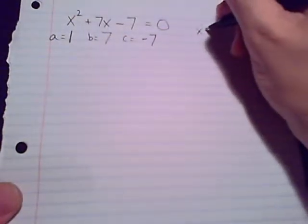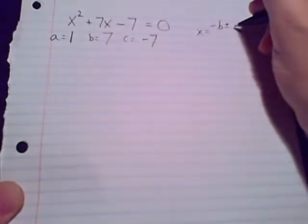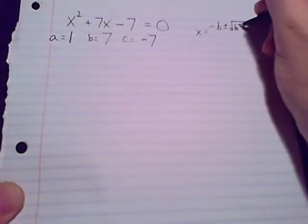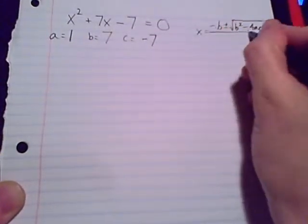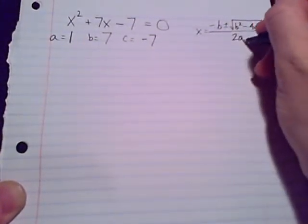And let's plug into this formula: x equals negative b plus or minus square root of b squared minus 4ac, all over 2a.